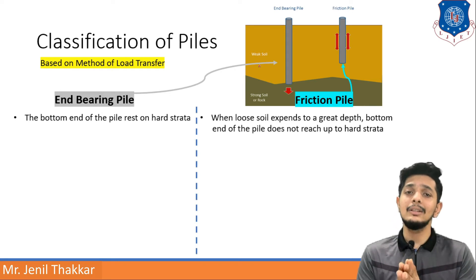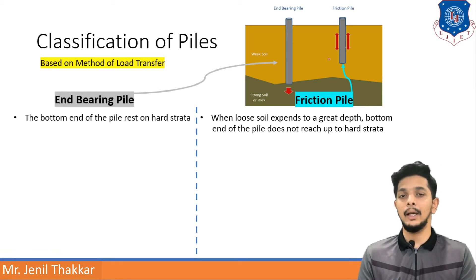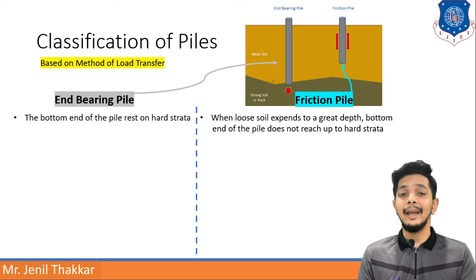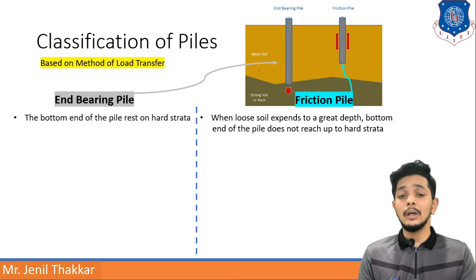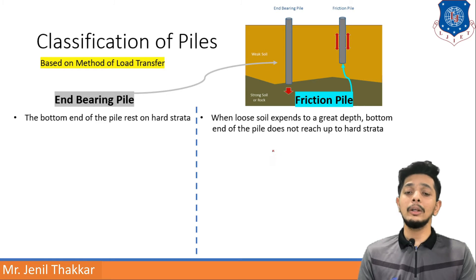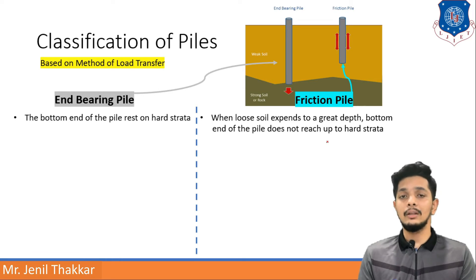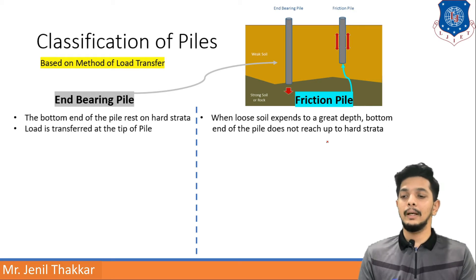Here you can see an image showing an end bearing pile and a friction pile. If the bottom end of the pile rests on hard strata, it is an end bearing pile — you can see the bottom end resting on hard strata although the upper portion is in weak soil. In the case of a friction pile, when loose soil extends to a great depth and the bottom end of the pile does not reach hard strata, you go for friction piles.